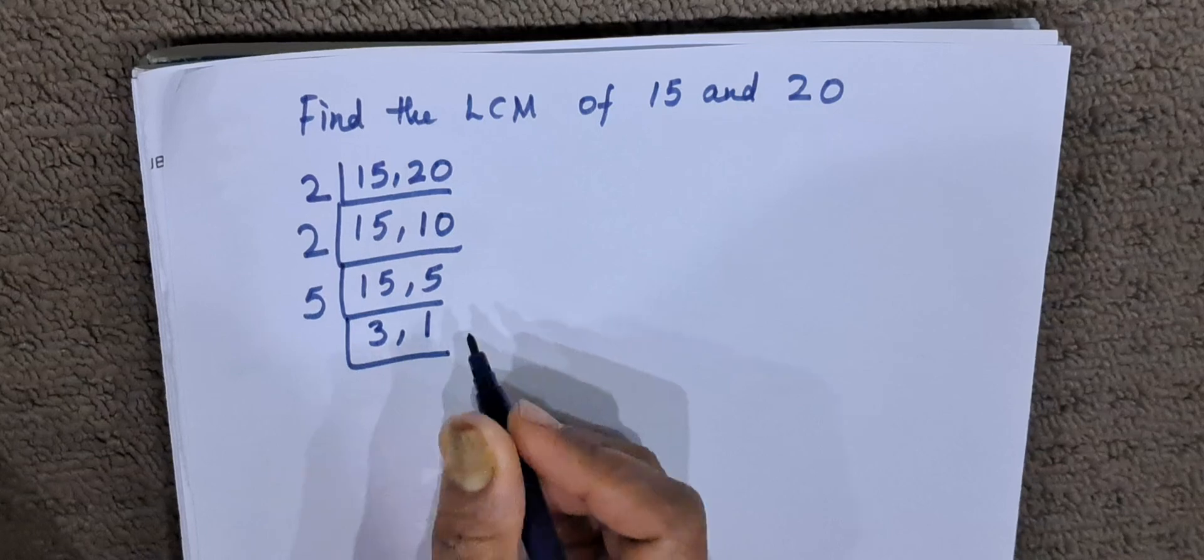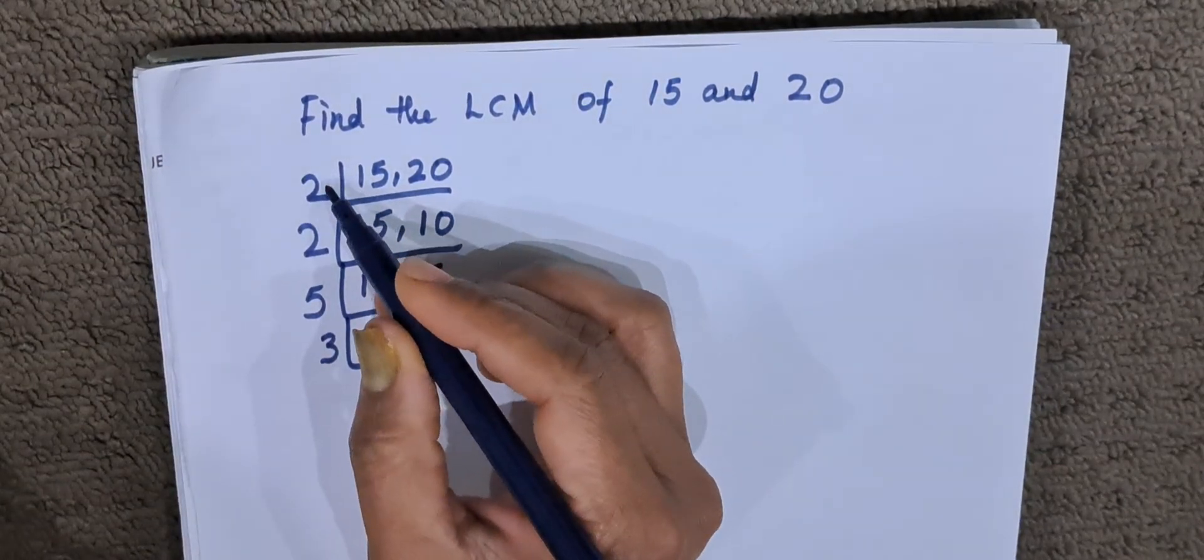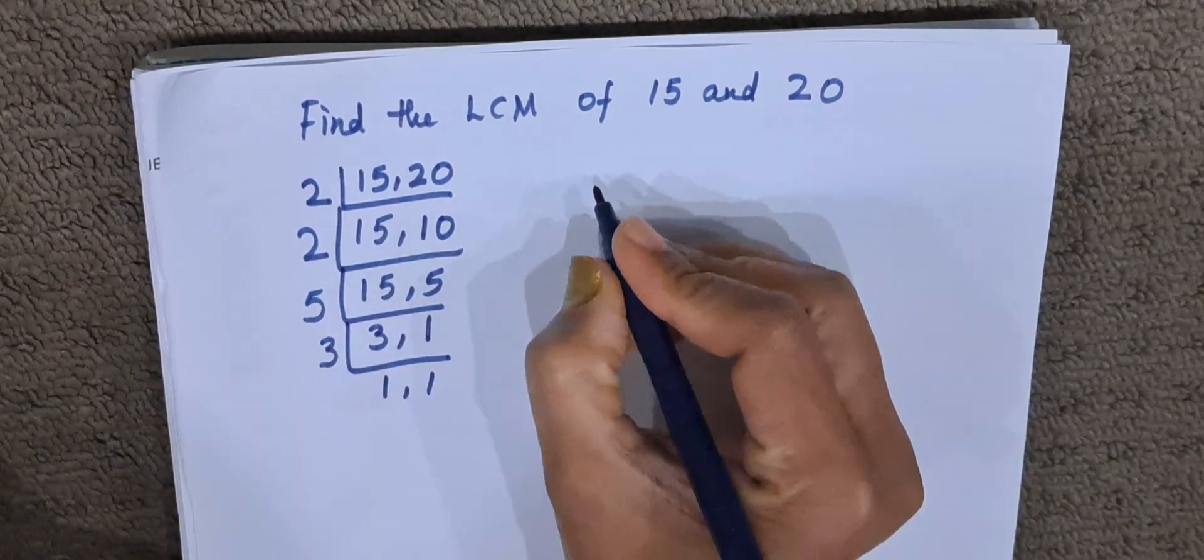Now 3 times 1 is 3. So we have got the prime factors as 2, 2, 5, and 3.